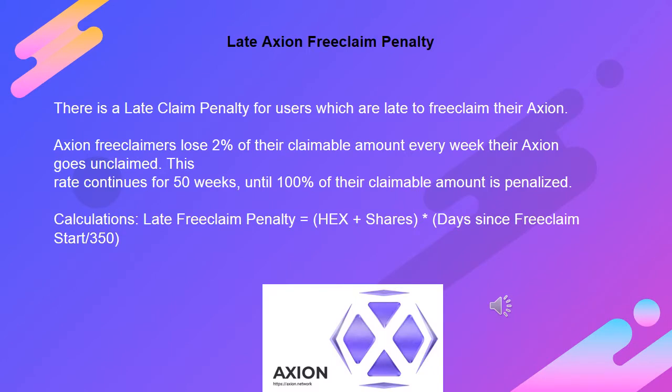There is a late claim penalty for users who are late to free claim their Axion. Axion free claimers lose 2% of their claimable amount every week their Axion goes unclaimed. This rate continues for 50 weeks until 100% of their claimable amount is penalized. The late free claim penalty equals: HEX plus shares, times days since free claim start, divided by 350.